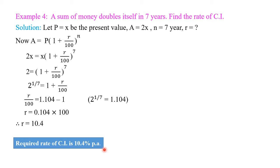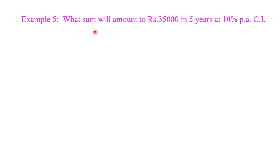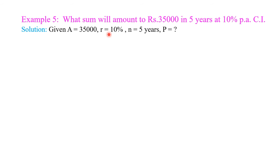The rate of compound interest is 10.4%. Example number 5: What sum will amount to Rs 35,000 in 5 years at 10% per annum compound interest? In this example, the given information are: we have to find the sum, so P is equal to question mark. Amount A is equal to 35,000, number of years n is equal to 5, and the rate of interest R is equal to 10%.